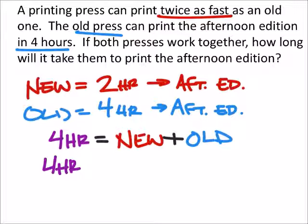The old edition will print one, I'm just going to call it a job. It will do one job, which is print the afternoon edition. The new one in four hours will print how many of those jobs? Two jobs, right? So working together in four hours, we should get two jobs plus the one job.